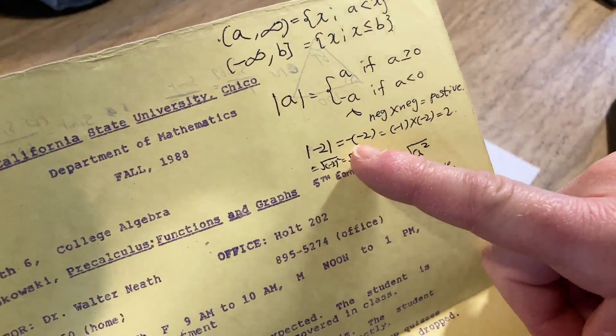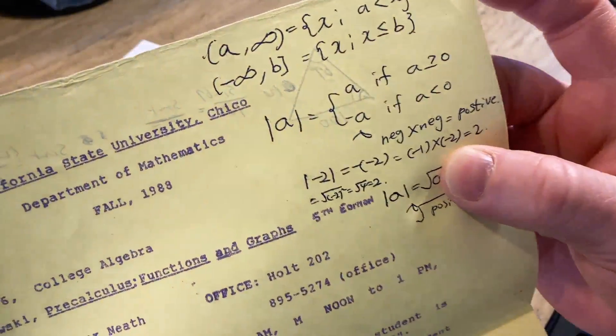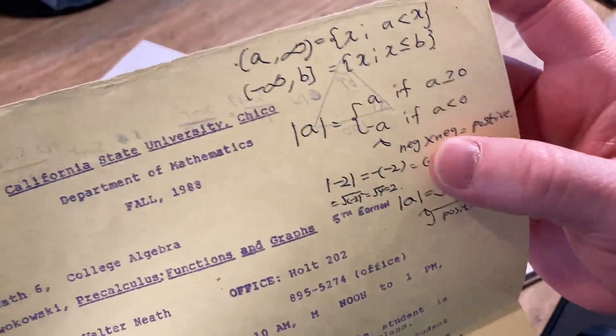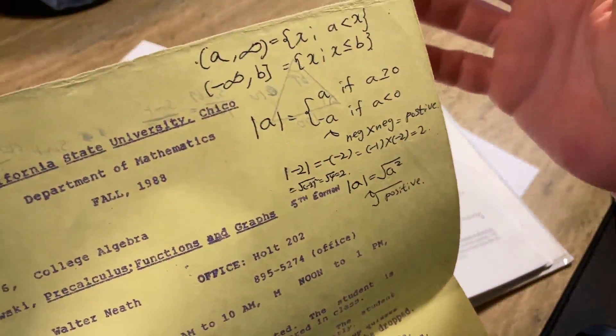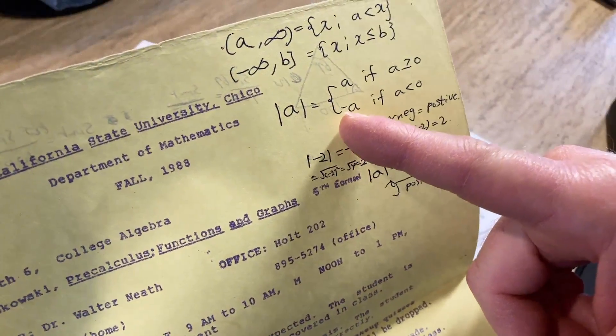And then like negative one times they put a little X there. That's two. Okay, that's why it's positive. That's why it's okay. Because people always say, oh, absolute value can't be negative. And then you look at this definition and you see a negative where you're like, what?